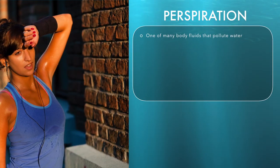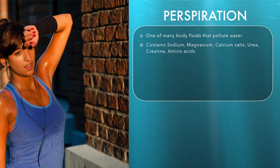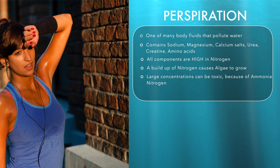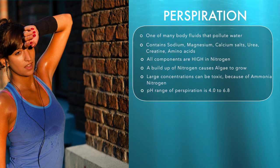Perspiration is just one of many body fluids that pollutes swimming pool water. Perspiration contains sodium, magnesium, calcium salts, urea, creatine and amino acids. All of these components are high in nitrogen. A build-up of nitrogen causes algae to grow and in large concentrations can be toxic because of the associated ammonia nitrogen. The pH range of perspiration is 4.0 to 6.8.